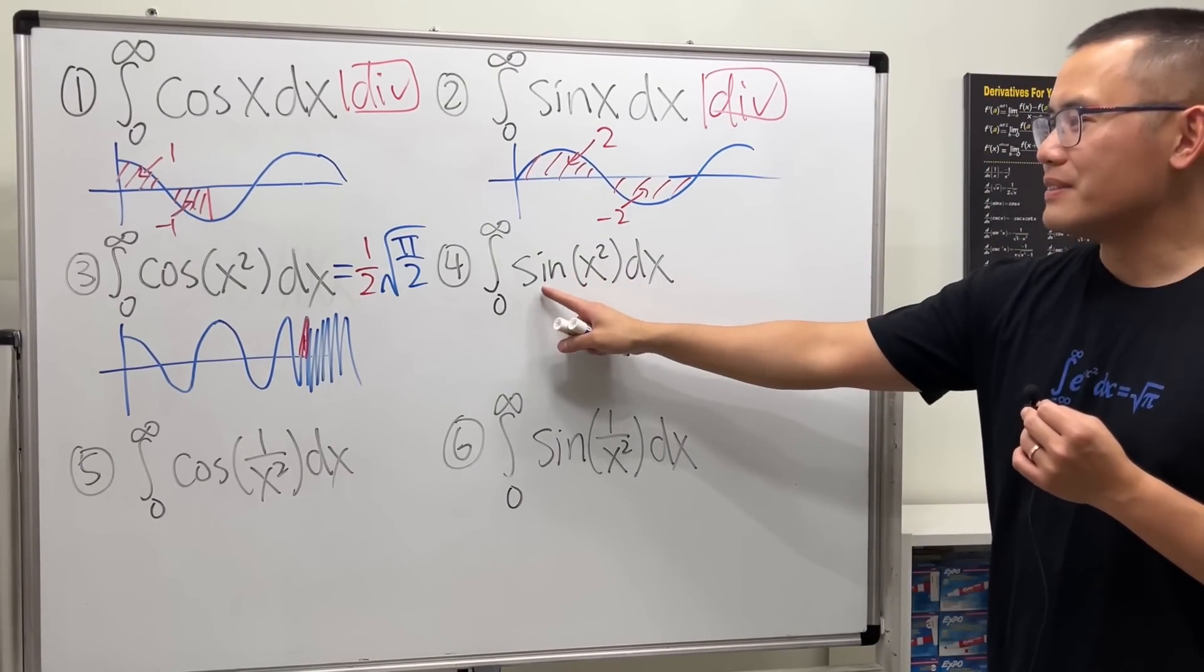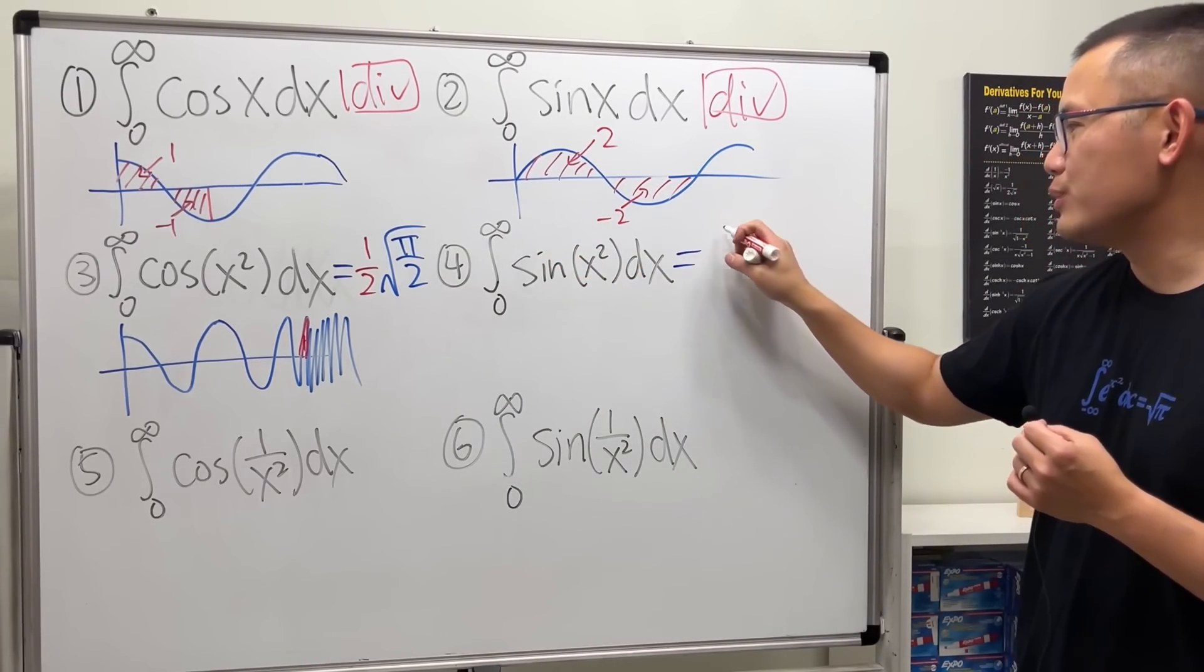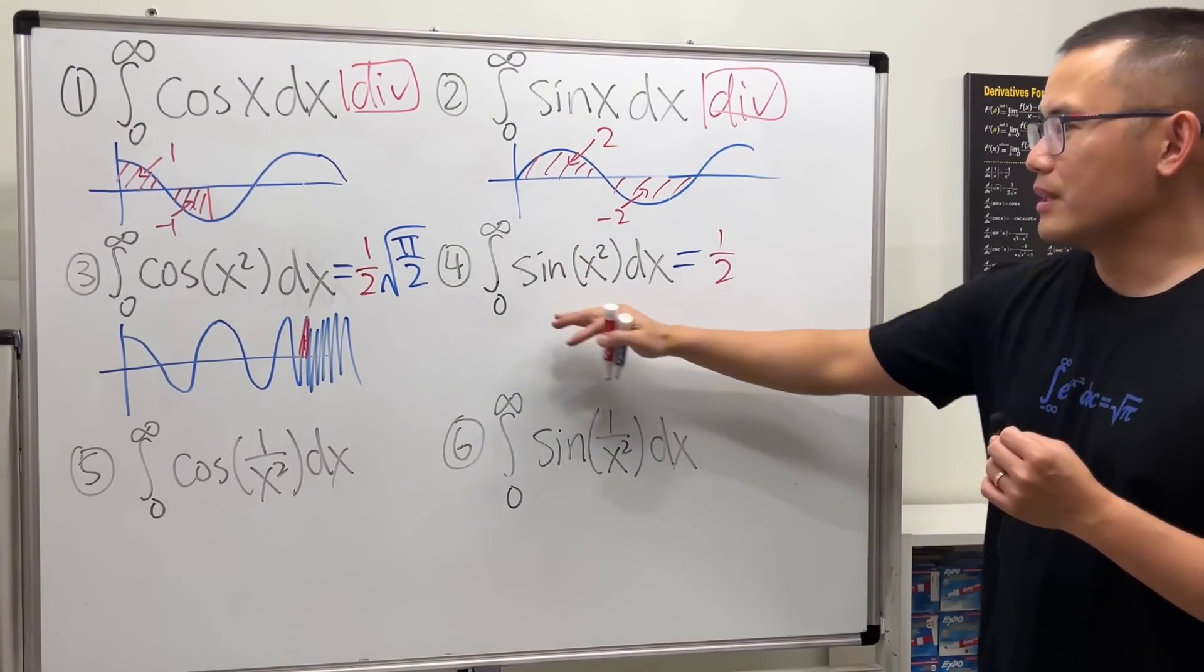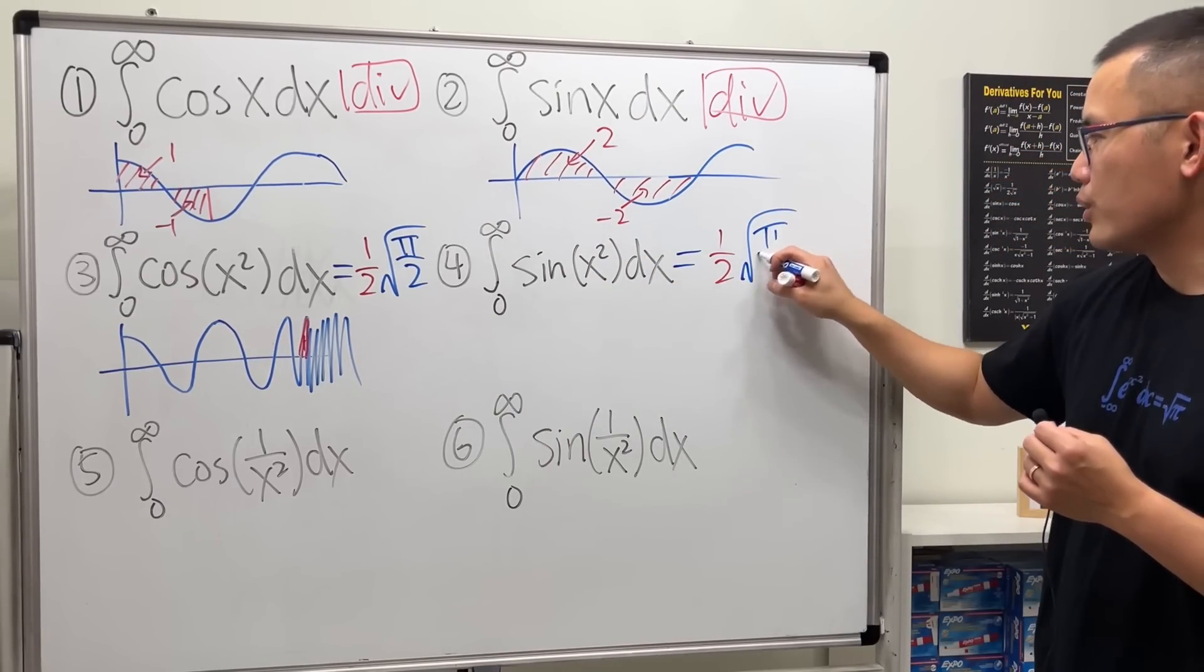Right here, when we have sine of x squared, same thing. In fact, they have the same value. So I think this is really cool. Half, because it's going from 0 to infinity. And we have square root of pi over 2.